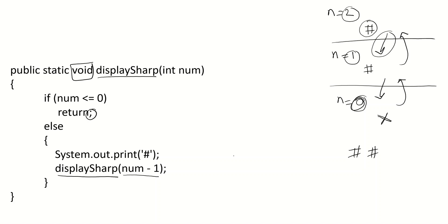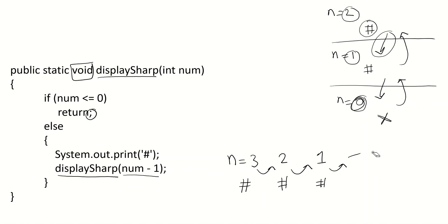Let's trace through the execution. If the value of n is 3: display sharp, continue; if n is 2, display sharp, continue; if n is 1, display sharp, continue; when we reach 0, that is the end and we do nothing. Going back, there is nothing more to do on the way back. At the end, we have 3 sharps displayed because the value of n was 3.